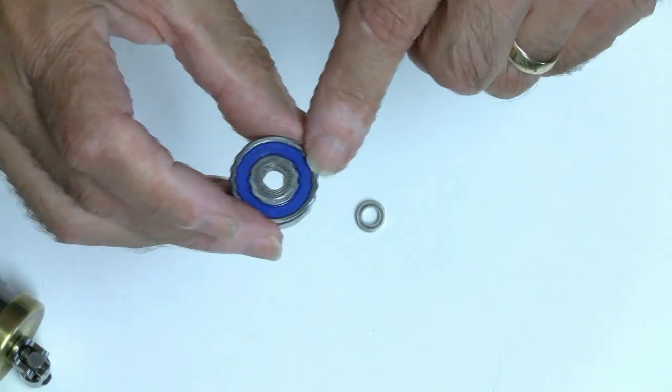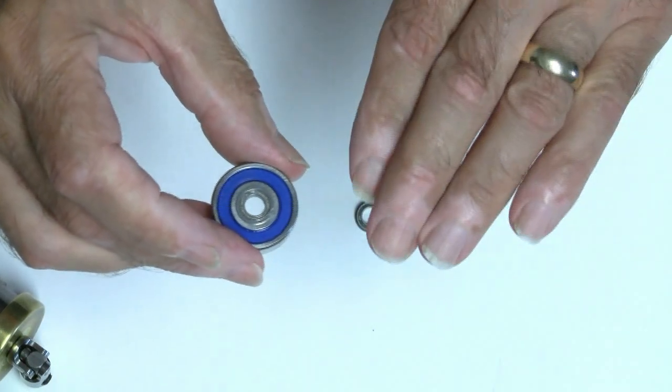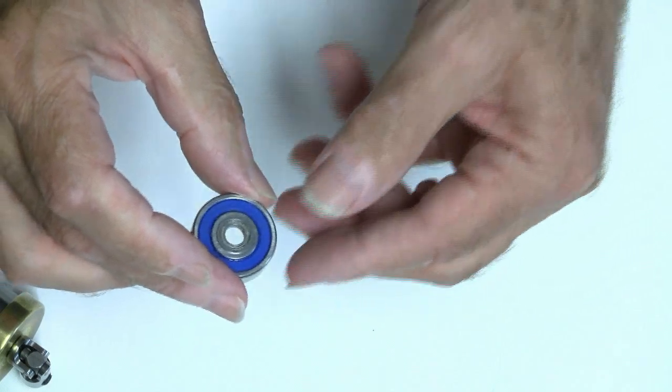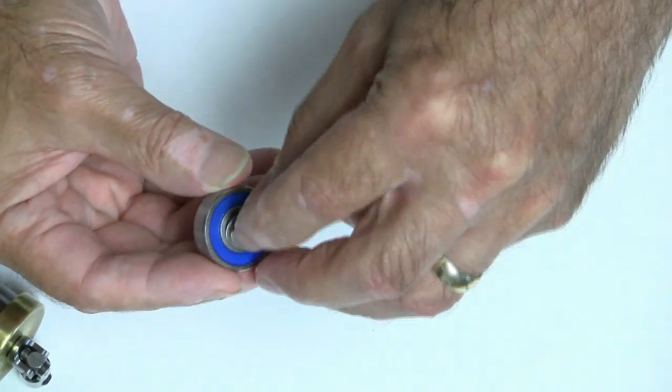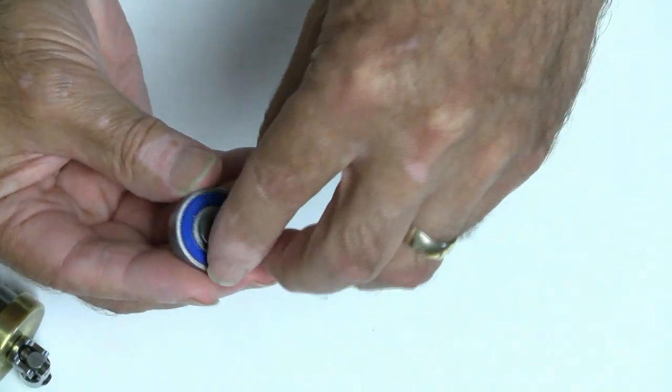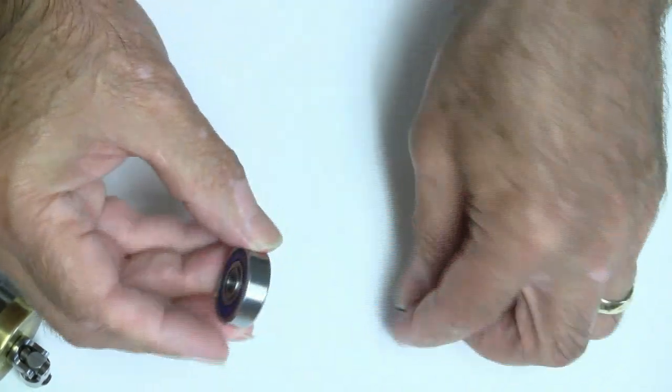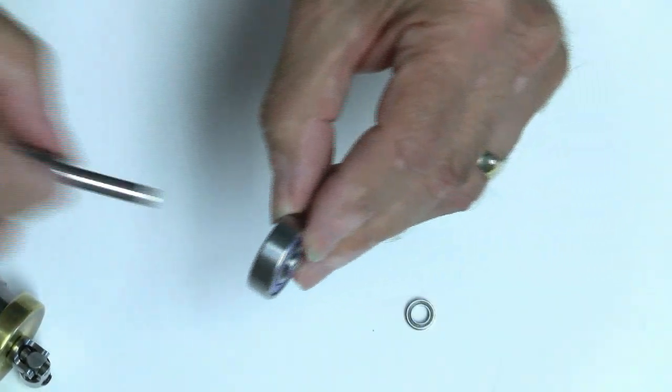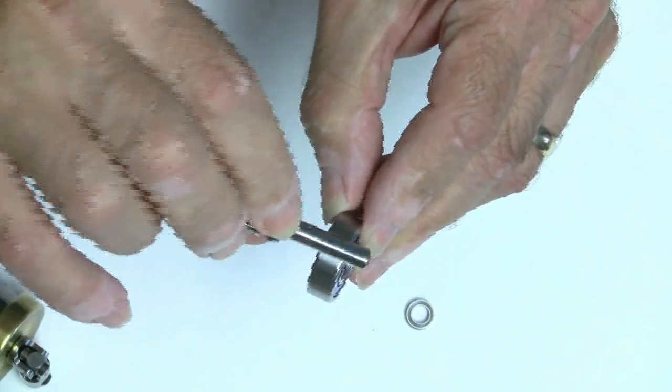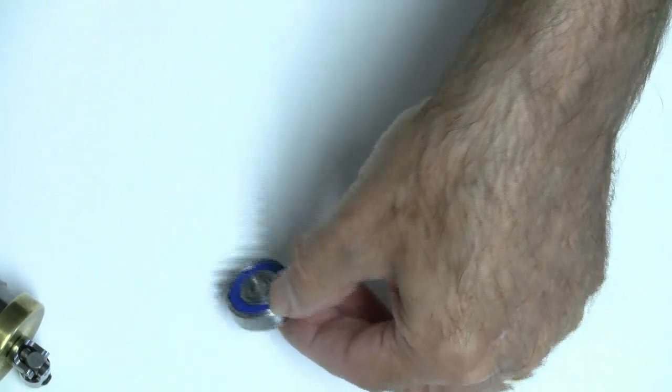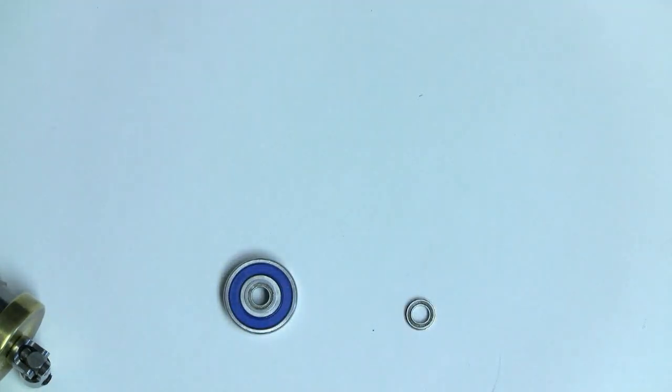The nice thing about these little guys is they have a collar here, so when you press them into the large bearing they set flush. I put one on one side of the bearing, then flipped it over and pressed one into the other side. That gave me better lateral stability because I had two bearings rather than just one.